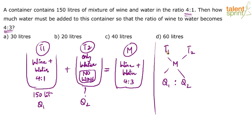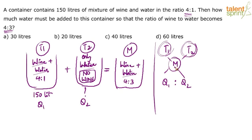Now what can we take for type 1 and type 2? We can take the concentrations — either the concentrations of wine everywhere or the concentrations of water everywhere. So: concentration of wine in t1, concentration of wine in t2, and concentration of wine in the mixture; or the concentration of water in t1, concentration of water in t2, and concentration of water in the mixture. When you take the cross differences, the ratio you get is q1 to q2. Let's go with the concentration of water.